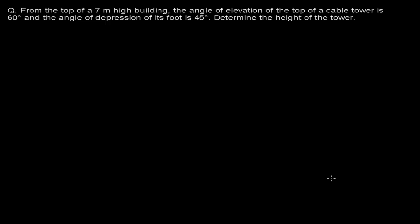Hello friends, again I come over here with another trigonometry word problem. The question says: from the top of a 7 meter high building, the angle of elevation of the top of the cable tower is 60 degrees and the angle of depression of its foot is 45 degrees. Determine the height of the tower.